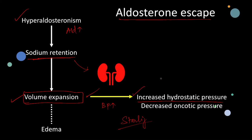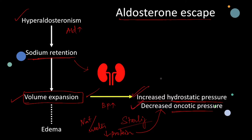Whenever the ECF volume expands, the arterial blood pressure also increases. This is reflected in the Starling forces at the level of capillaries. An increased arterial blood pressure increases the capillary hydrostatic pressure. Also, since there is only increase in sodium and water, the plasma protein concentration decreases, so the total oncotic pressure of the plasma also decreases when there is volume expansion.